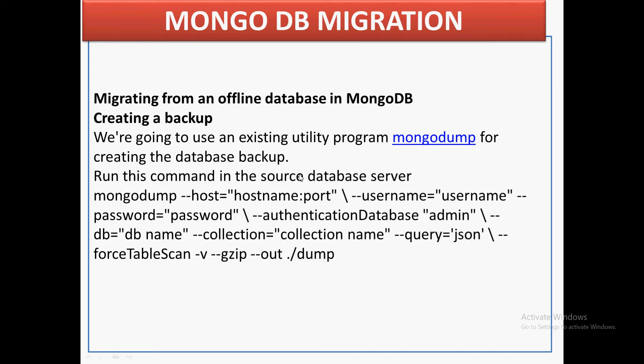We have MongoDump, MongoExport, MongoRestore, and MongoImport — these are the different options through which we can migrate data. MongoDump has an equivalent called MongoExport, and on the restore side we have MongoImport and MongoRestore.